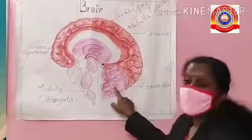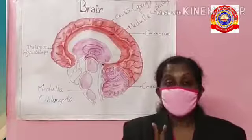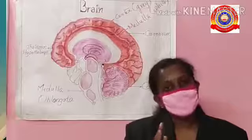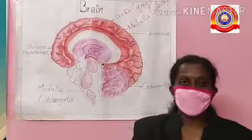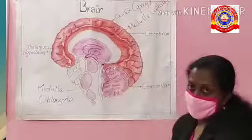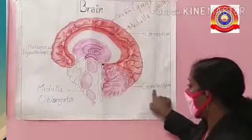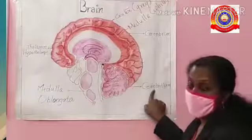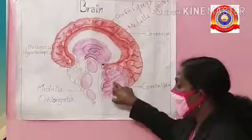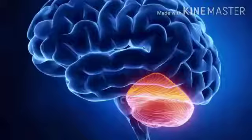The cerebellum is the second largest part of the brain and is seen just behind the cerebrum. The cerebellum contains fissures and grooves with two flaps, which you can see in the video.